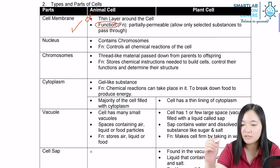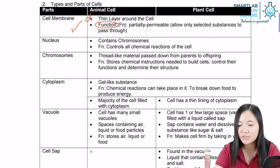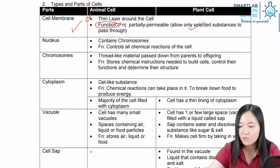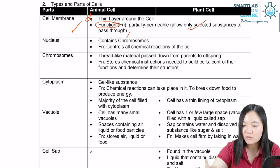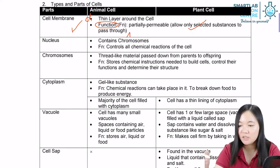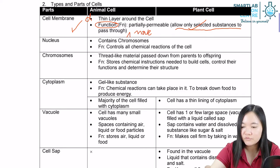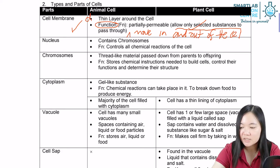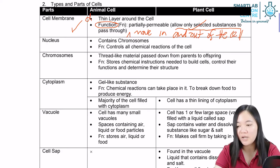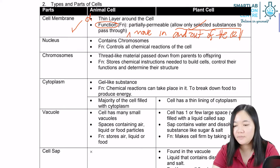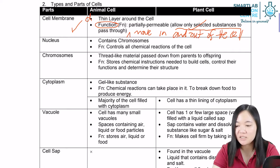I want you to memorize the function instead. The function of the cell membrane is that it allows only selected substances to pass through, or more precisely, it allows only selected substances to move in and out of the cell. Substances don't just move freely into the cell — that would cause the cell to rupture. Substances need to move in and out in balance.